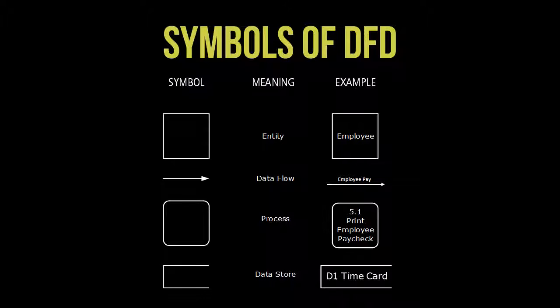A process represents a business activity. The goal of each process is to change or transform inputted data into useful output. An example might be creating an applicant record or updating an employee record. Since data are transferred as part of these processes, they should be labeled with action verbs — for example, calculate, send, print, or verify.